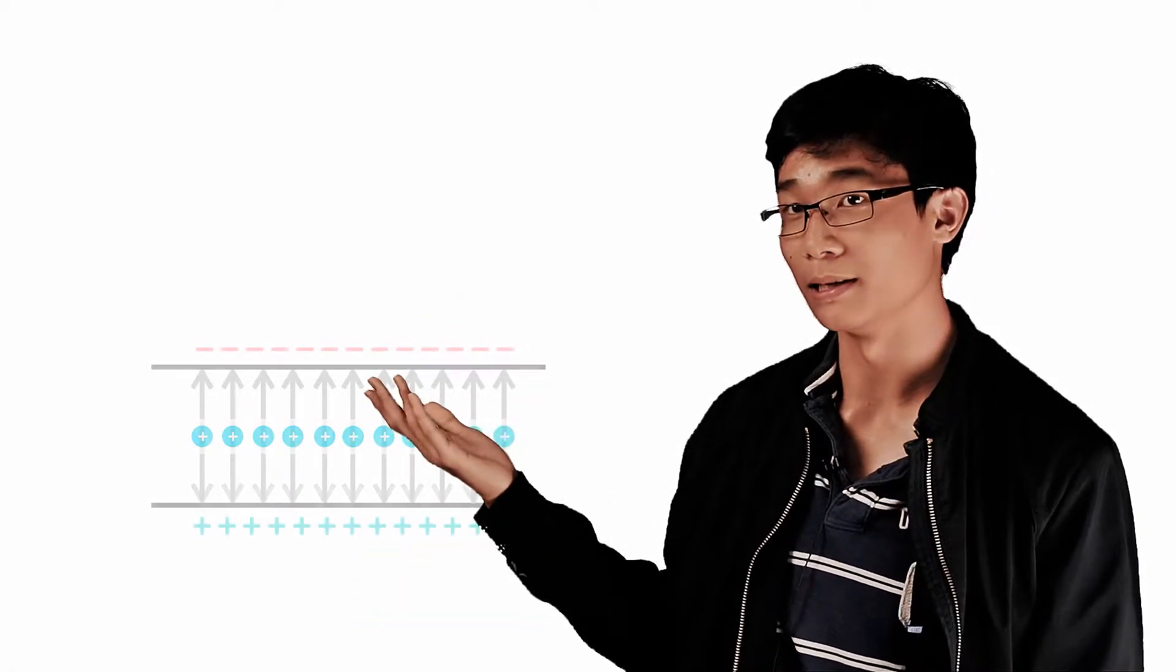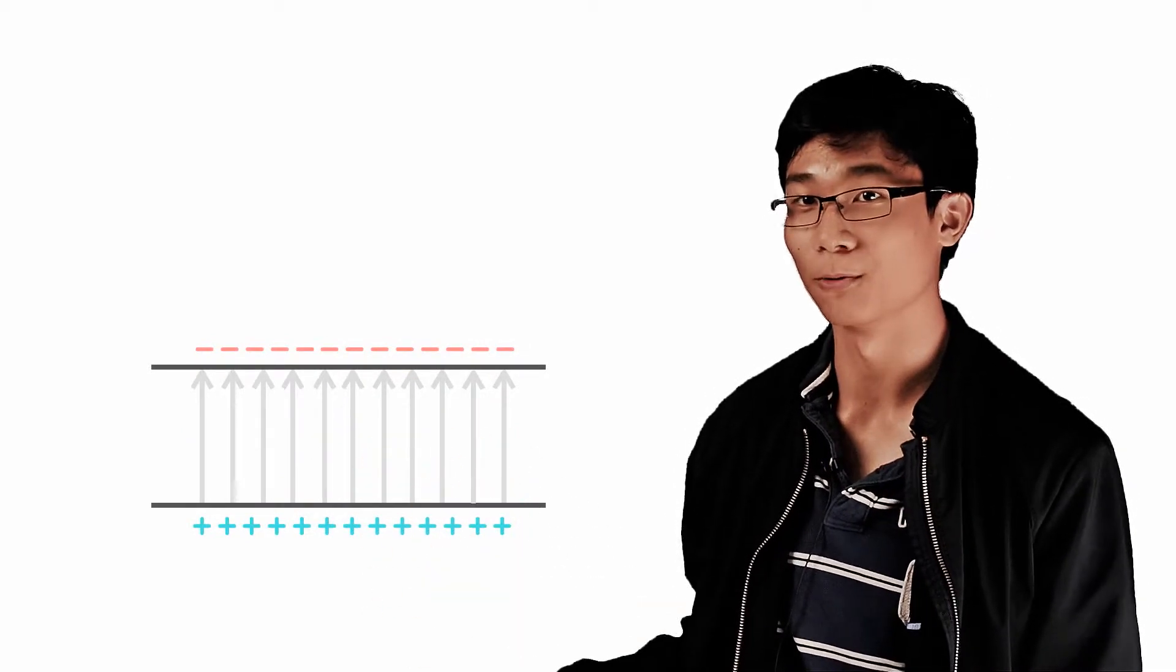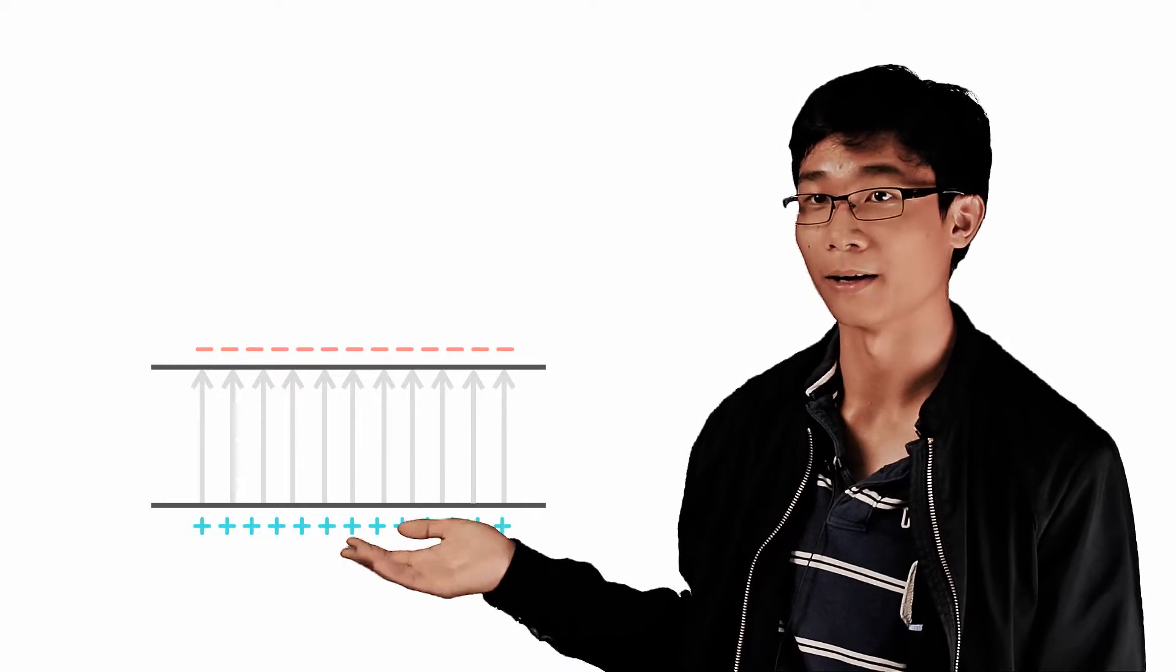So with another oppositely charged plate parallel to the first, the electric field can be connected between the two plates, so that they are parallel and of the same strength, away from the edges close to the center.